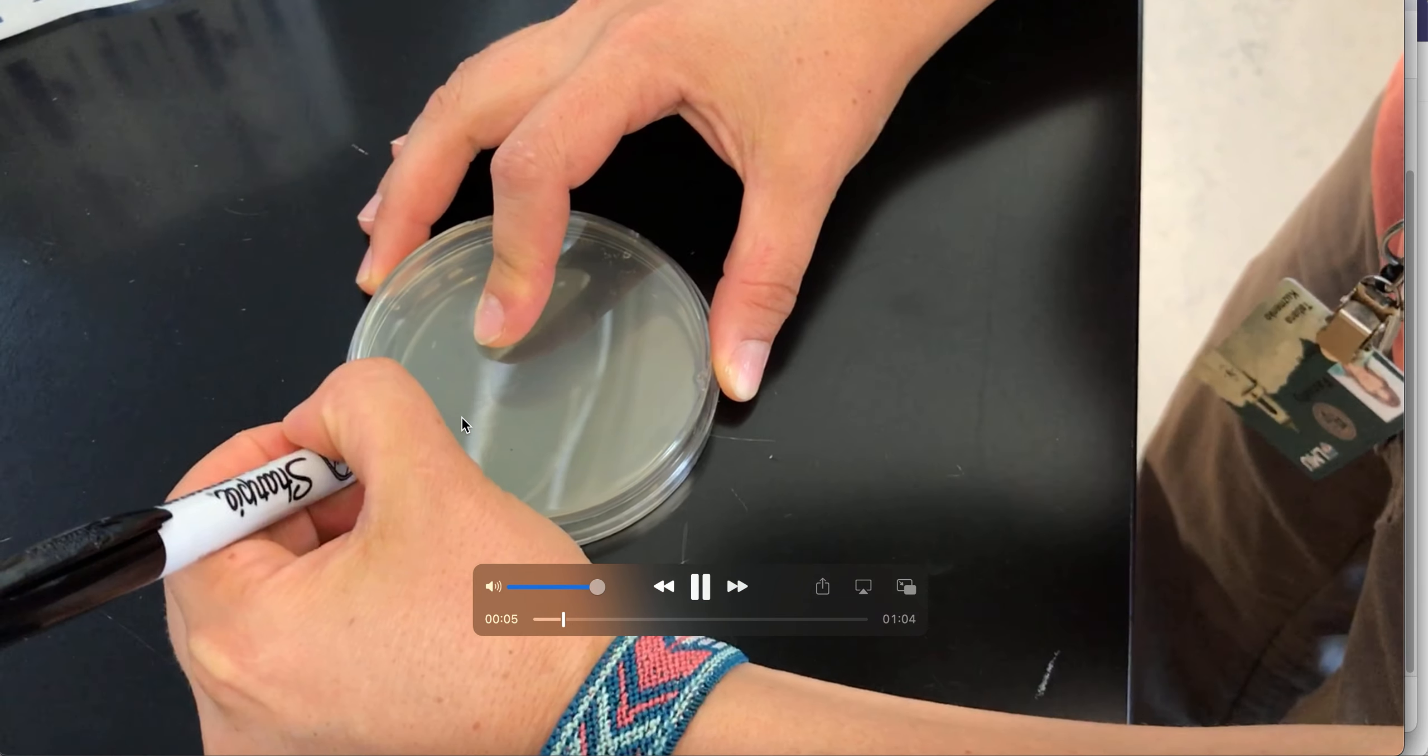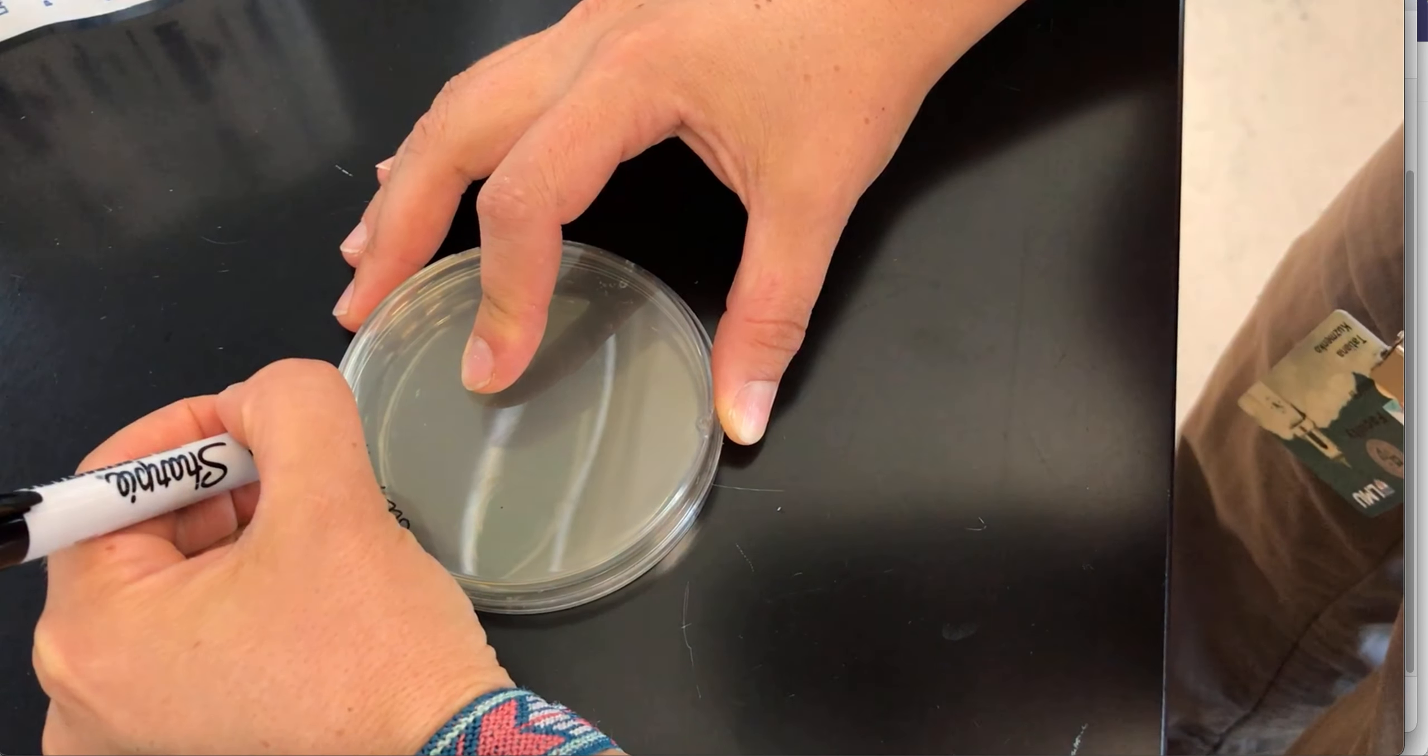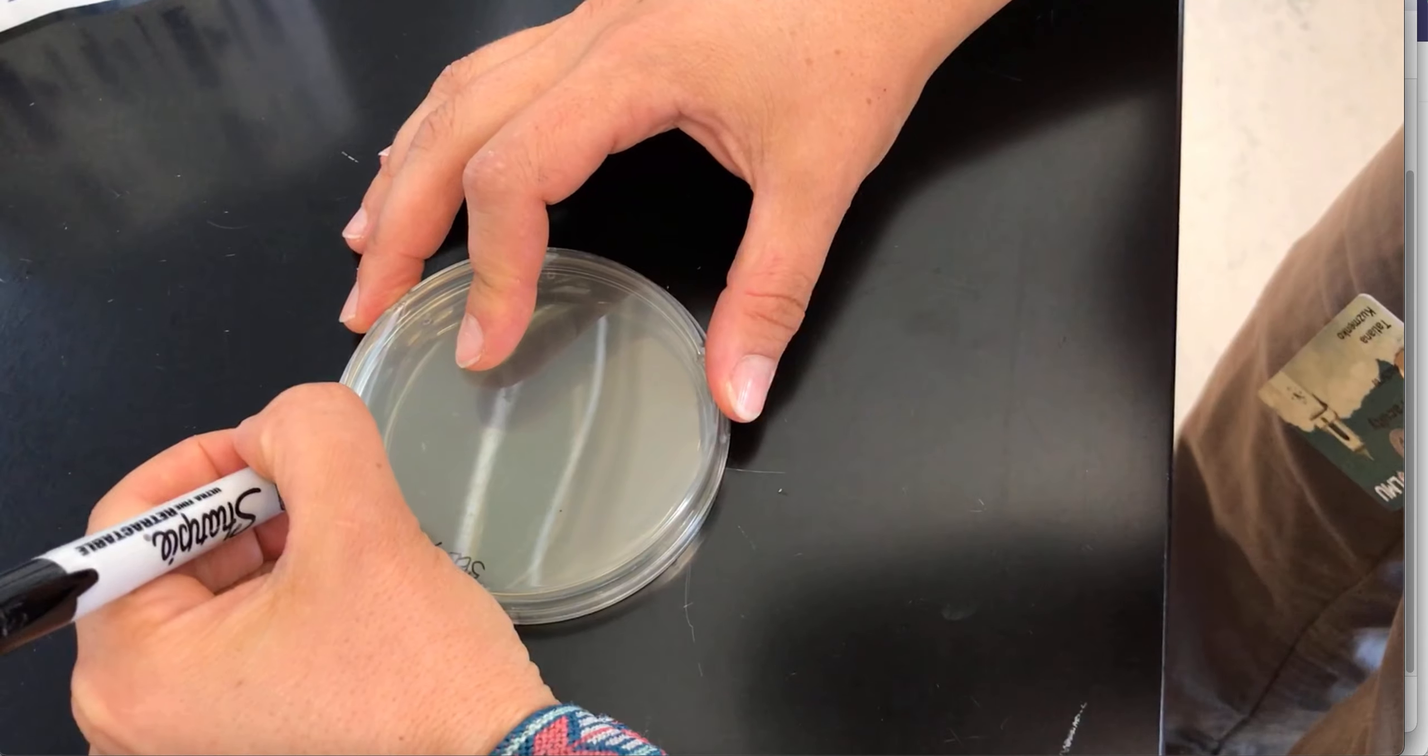Label your plate around the corner with your section number, initials in your group, the date, and the surface that you used.